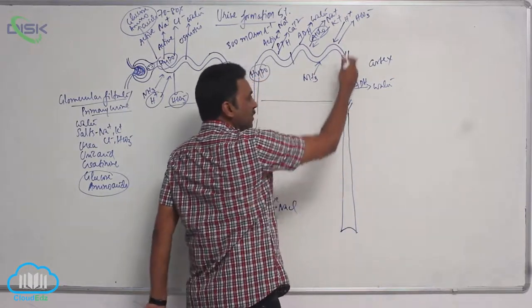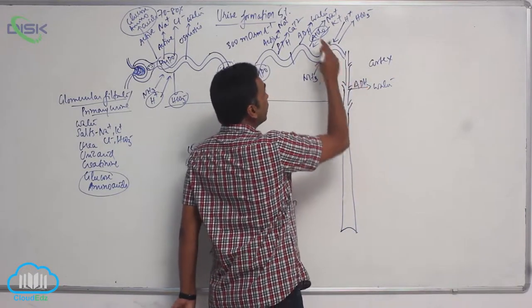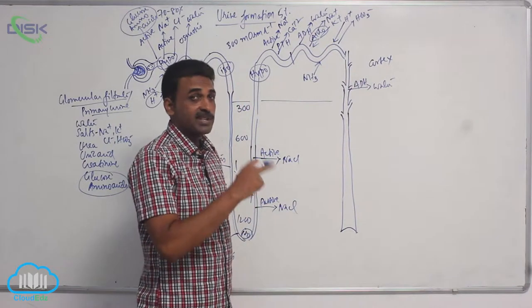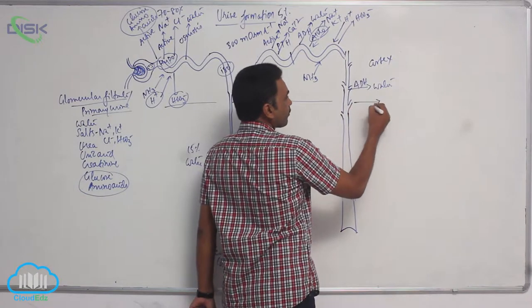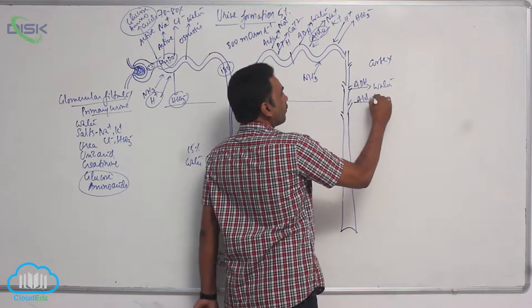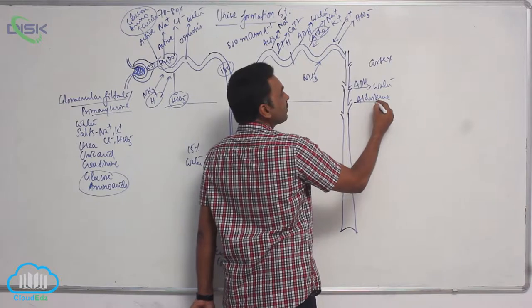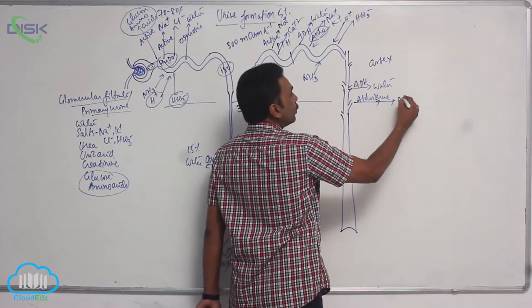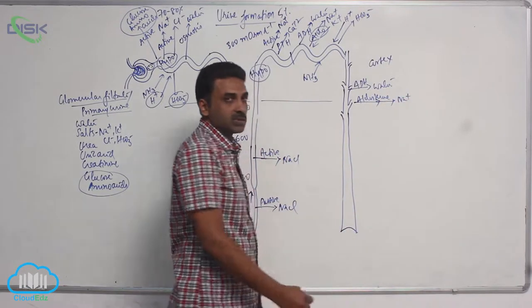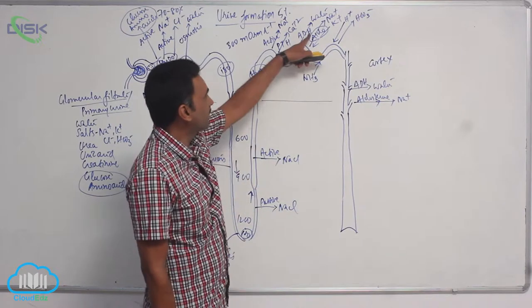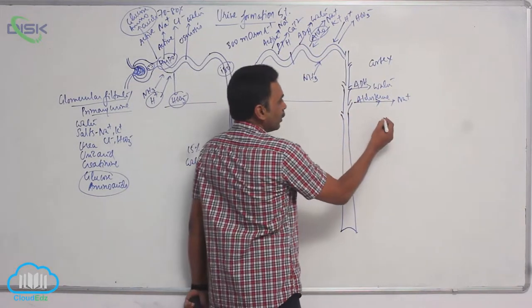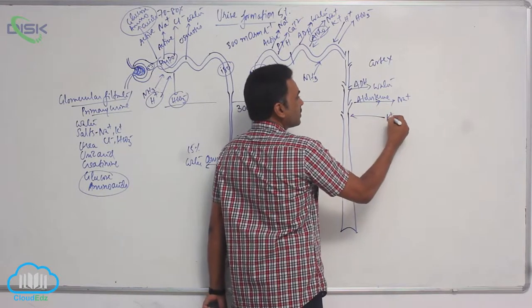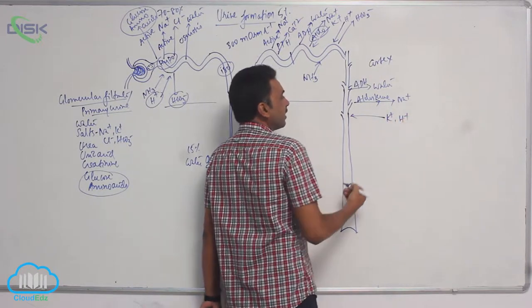In the collecting duct, under the influence of antidiuretic hormone, the principal cells absorb water. Under the influence of aldosterone, sodium absorption occurs. Principal cells absorb sodium; potassium ions and H+ ions are actively secreted.